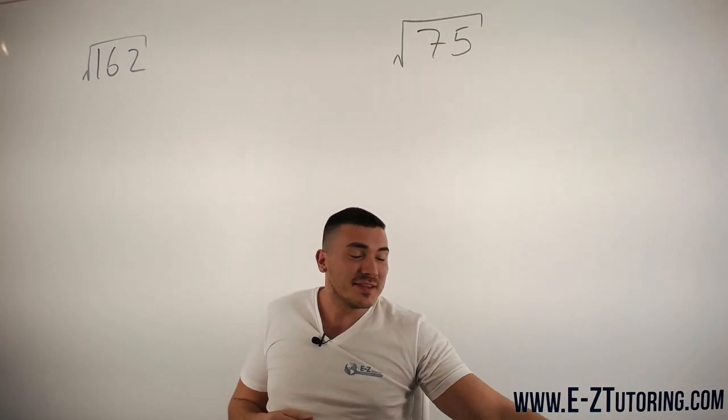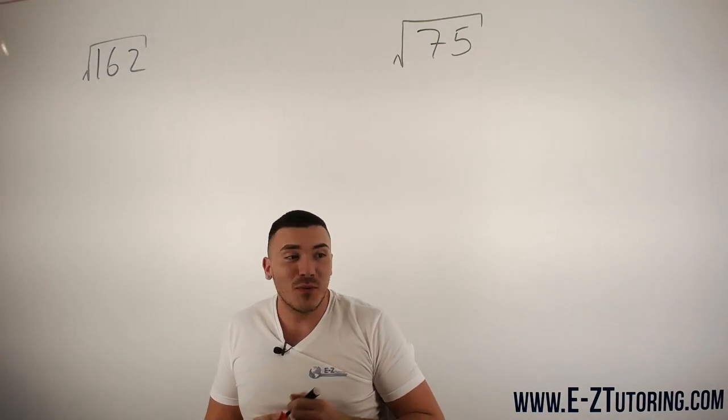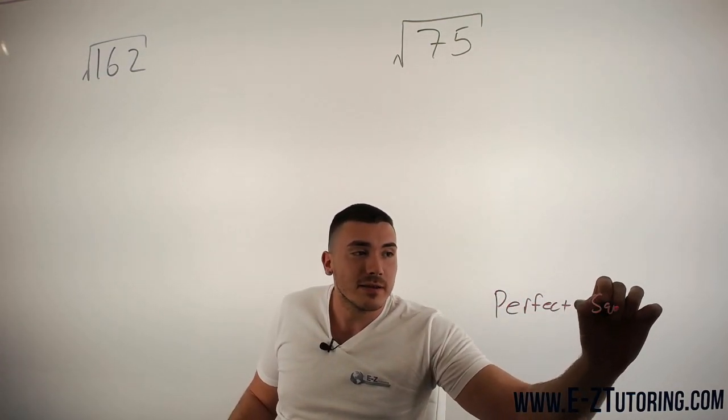So in order to simplify a number inside of a square root, you need to be familiar with what are called the perfect squares. So let's go ahead and take a look at our perfect squares.